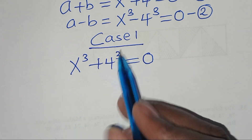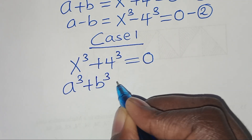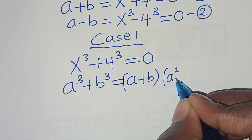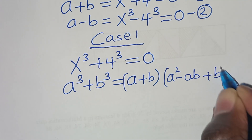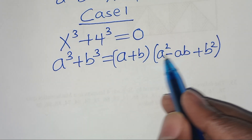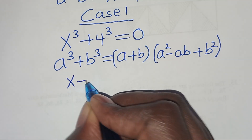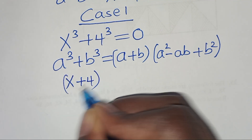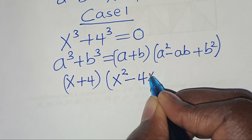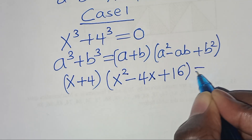This is the sum of two cubes, expressed as a³ + b³ = (a + b)(a² - ab + b²). Applying this identity, x³ + 4³ becomes (x + 4)(x² - 4x + 4²), which is (x + 4)(x² - 4x + 16) = 0.